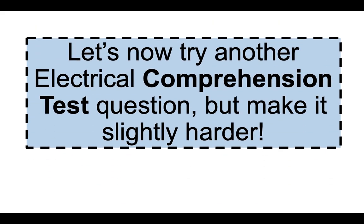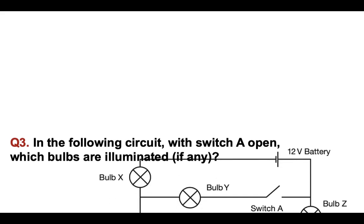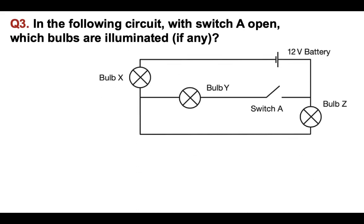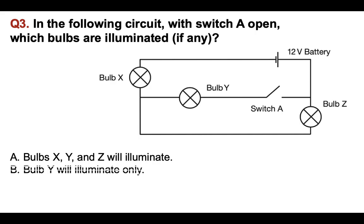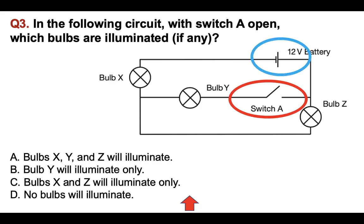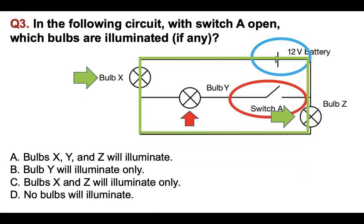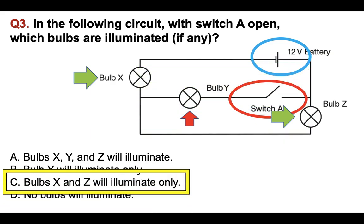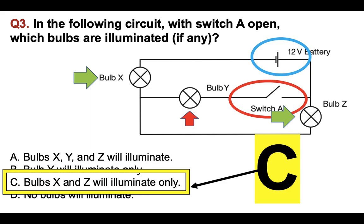Let's try another electrical comprehension test question, slightly harder. Question three: in the following circuit, with switch A open, which bulbs are illuminated if any? A, bulbs X, Y and Z will illuminate; B, bulb Y will illuminate only; C, bulbs X and Z will illuminate; or D, no bulbs will illuminate. The switch is remaining open. That means bulb Y will not function because switch A is open — the circuit is not made. Whereas bulbs X and Z will illuminate because the circuit is made with the location of the battery. The correct answer is C, bulbs X and Z will illuminate only.